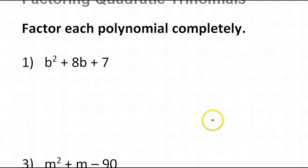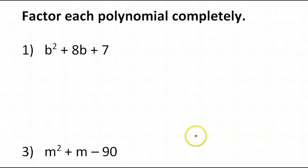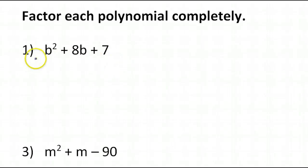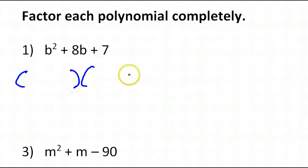Problem number one — there is no GCF. So let's move on to binomial times a binomial. You look at that b squared and you're thinking b times b. You look at that 7 — well, that's a prime number, so that can only be 1 times 7. Now the thing that you will hear me say over and over is: outer plus inner equals middle.